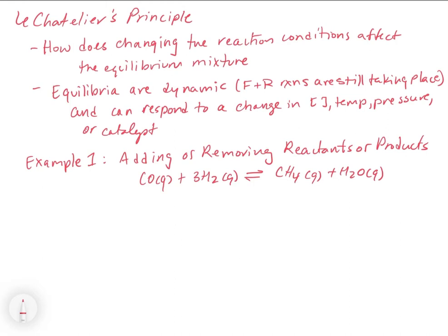We're going to look at each one of these different possibilities in turn. The first example is adding or removing reactants or products. The example reaction we're going to use throughout is: CO plus 3H₂ goes back and forth with CH₄ plus H₂O gas.